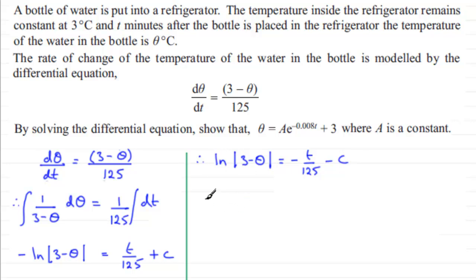I can now remove the natural log here by anti-logging both sides, and therefore have (3-θ) equals e to the power (minus t over 125 minus c).